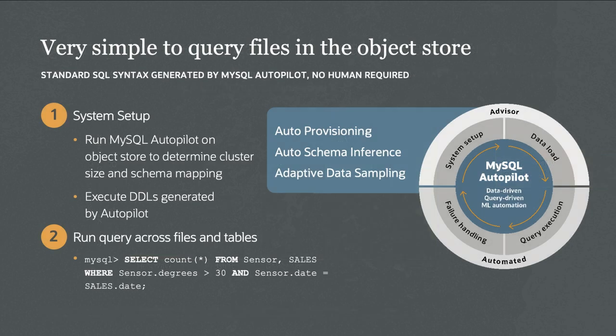It's very easy to use MySQL HeatWave Lakehouse. You run Autopilot, point it at the files you want to query, and MySQL Autopilot does two things: it figures out how much data you have and how big a cluster to provision, and it automatically generates a schema using both metadata stored in the file and analysis of the data itself. Then you provision the cluster and run queries — which can join files from the object store with OLTP tables maintained directly in MySQL HeatWave.